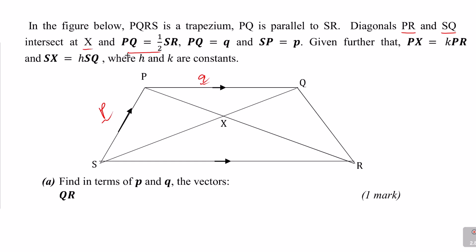Since PQ equals vector q and PQ equals half SR, SR will be twice PQ, so SR equals 2q. H and K are constants, sometimes referred to as scalars.